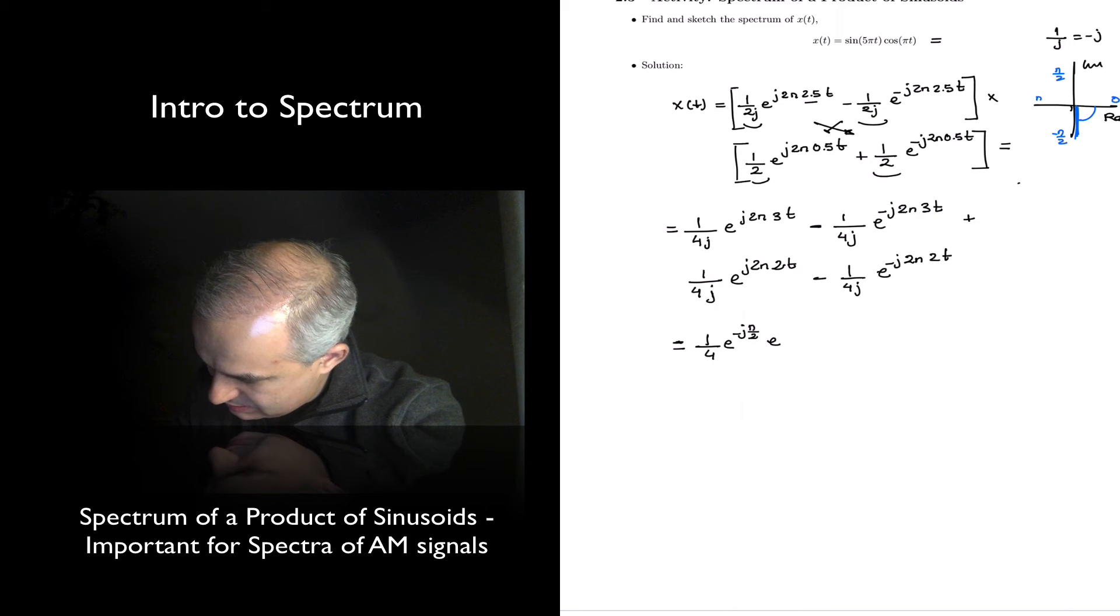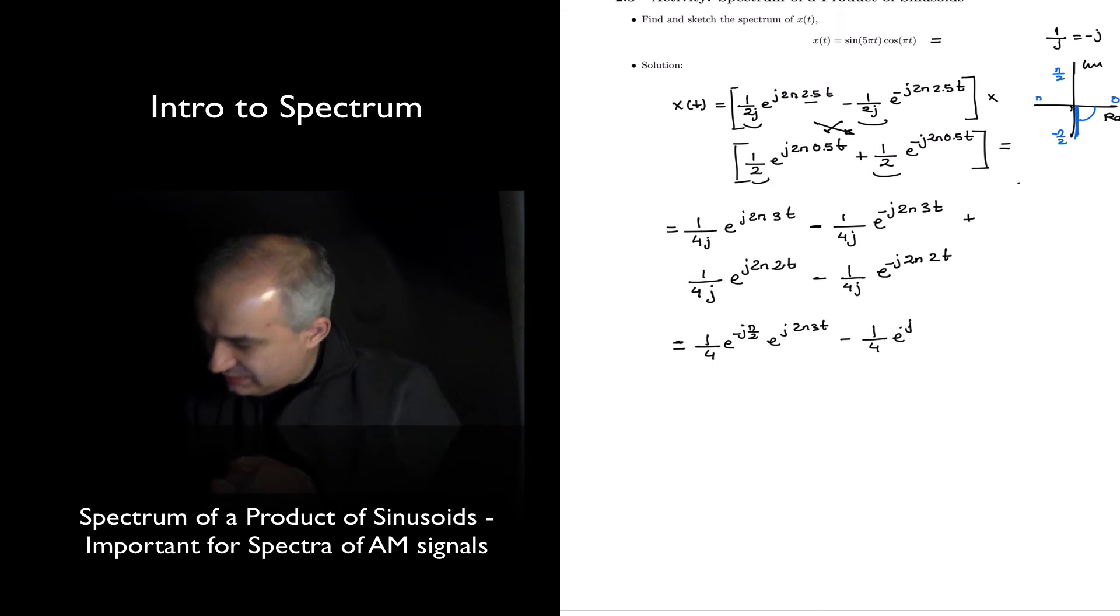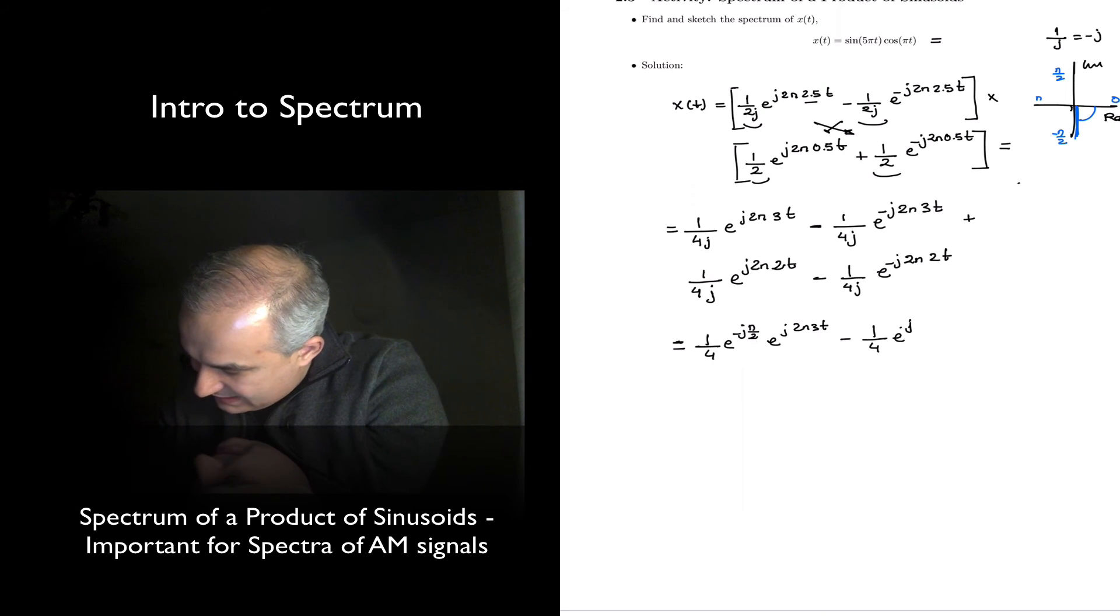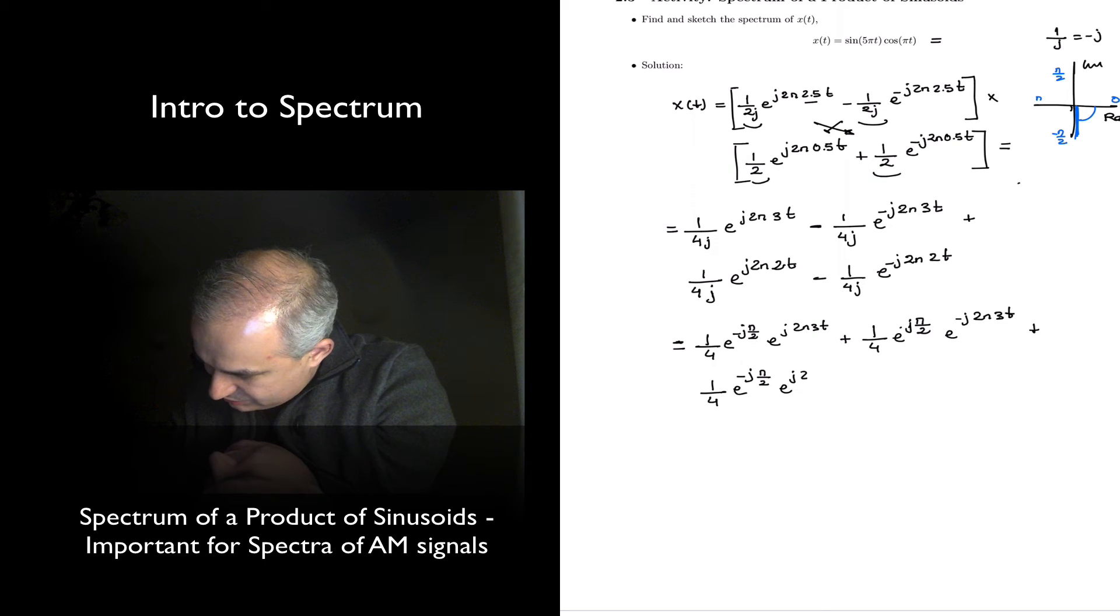e to the j 2 pi 3t, plus 1 half e to the positive, in this case we have the minus j, the 1 over j becomes minus j, minus times minus gives me the other positive. So this is plus 1 half e to the minus j pi over 2 e to the minus j pi over 2 e to the j 2 pi 2t. We can plot the spectrum now.